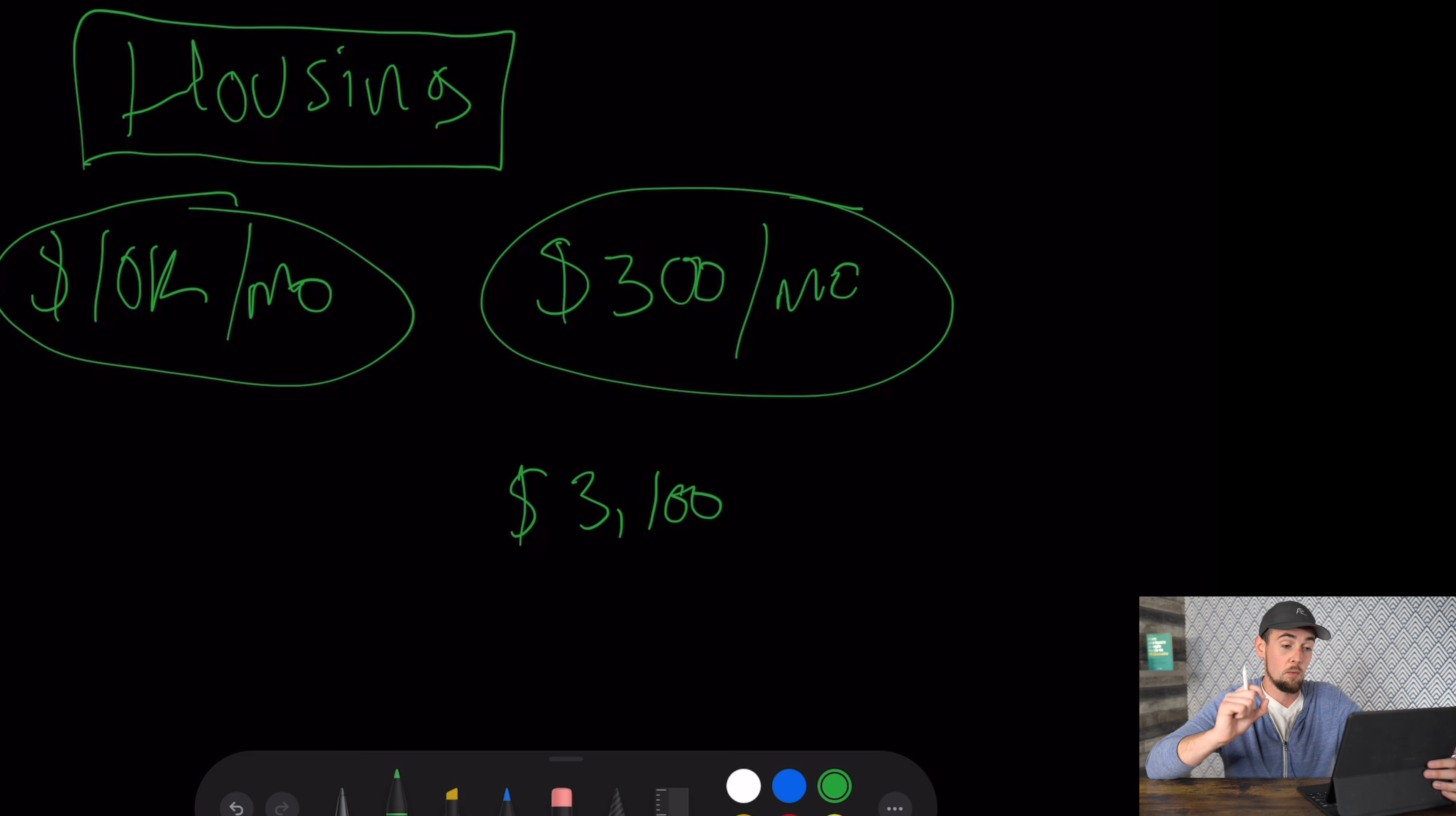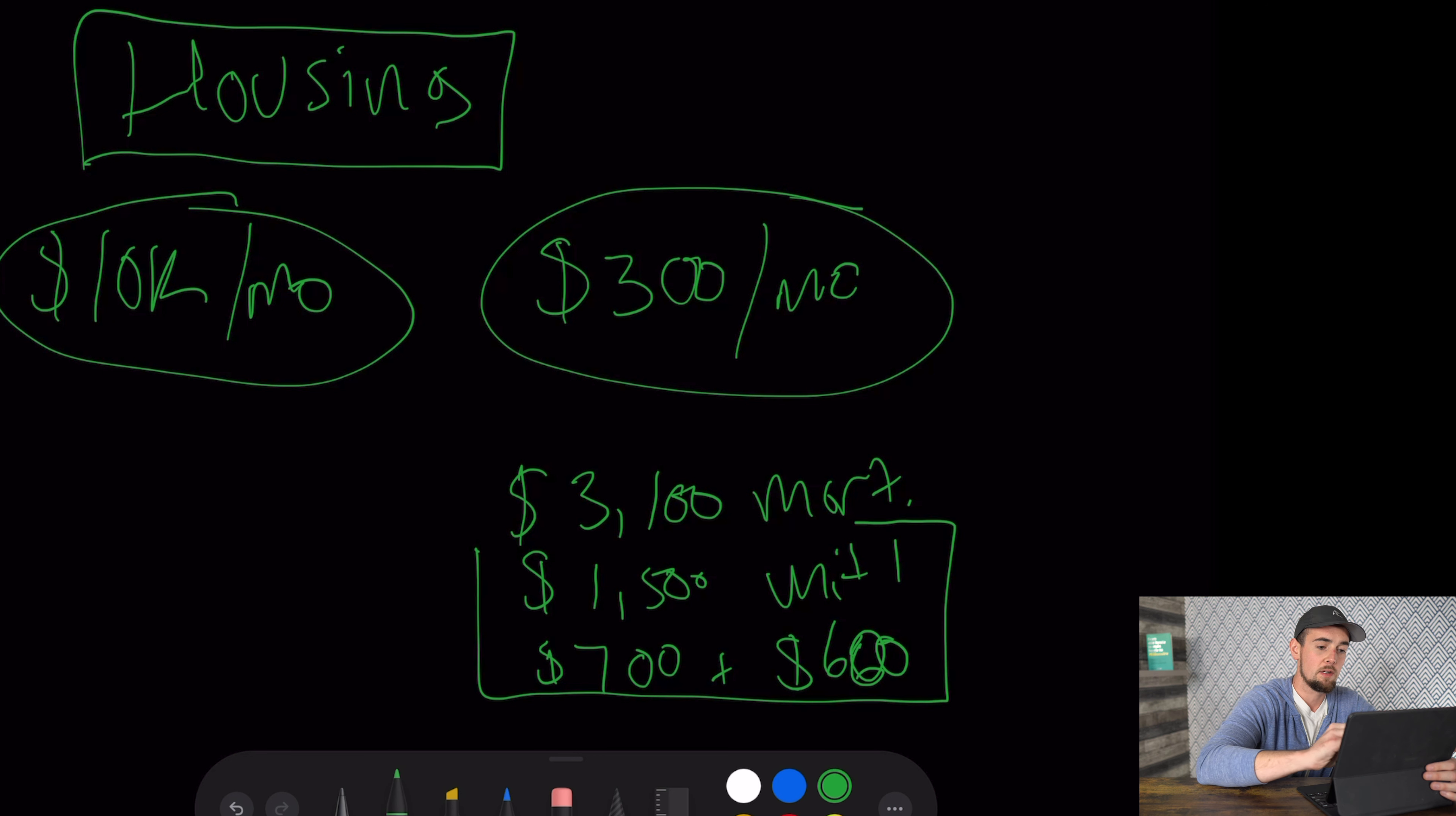But $3,100 is the mortgage, and then the first unit rents for $1,500. The second unit rents for $700, that's a much smaller unit, and then the third unit rents for $600. So in total here, the amount of rent collected is $2,800, and so that means I'm paying $300 per month of that mortgage, and that's where that $300 comes from.